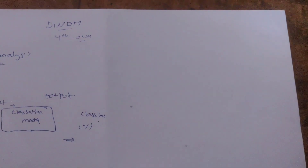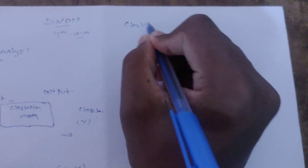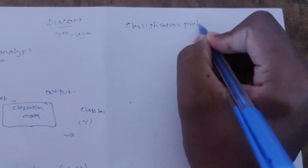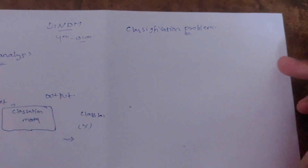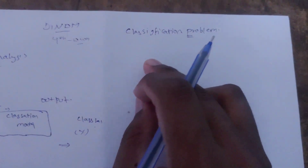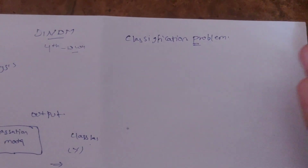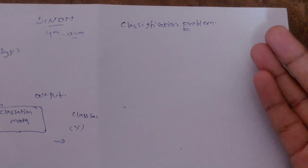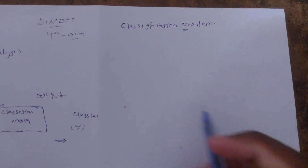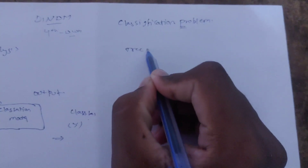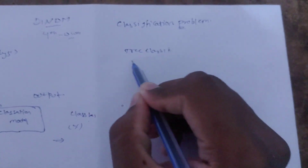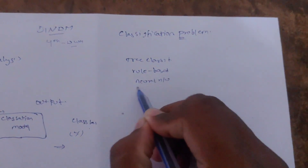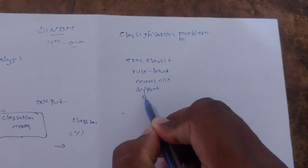We can set a classification problem using a systematic approach. Under the model, we need an input data set. There are three classifiers identified: decision tree rules, neural network, support vector machine, and a naive Bayes classifier.